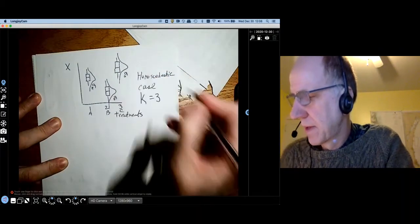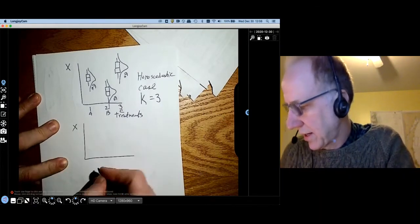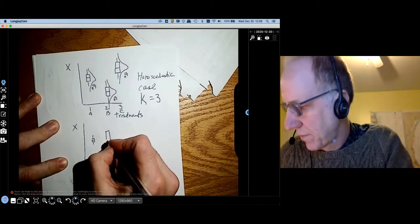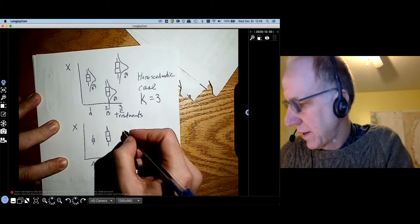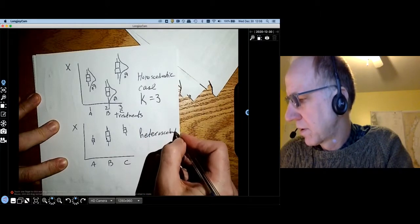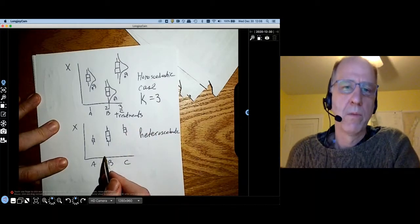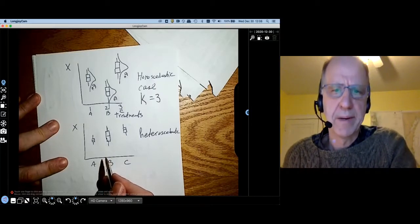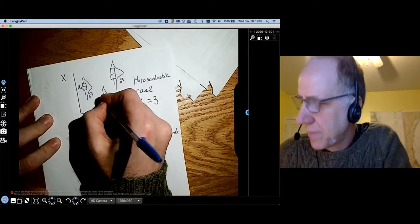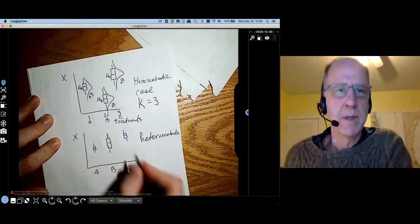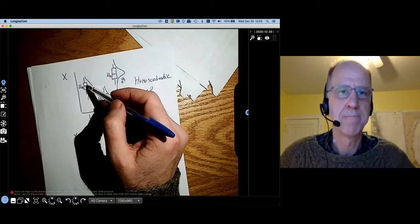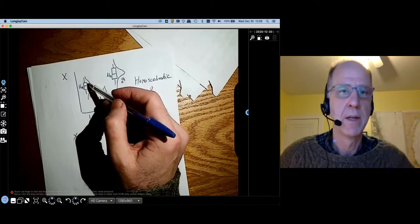We can call this the homoscedastic case. The heteroscedastic case would look something like this. Here's X, here's treatment A, B, and C. We have a very small distribution with A, maybe a very large distribution for B, and something in between for C. So this would be heteroscedastic. And we're not allowed to do this with one-way ANOVA. We would need a more complicated model. I should also show the treatment means on this plot. So this is going to be mu_A, mu_B, mu_C. So what's giving rise to the data is that drug A has a certain level of efficacy, but then there's other factors that may affect that and we lump those into the errors.